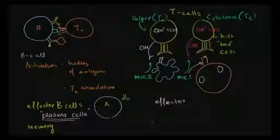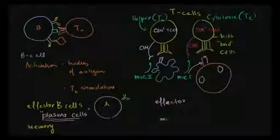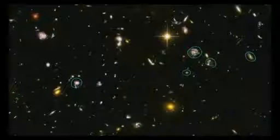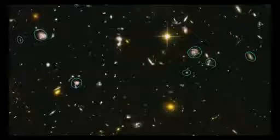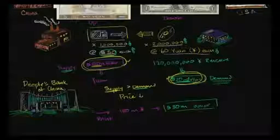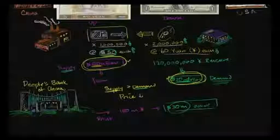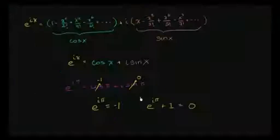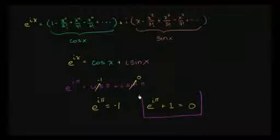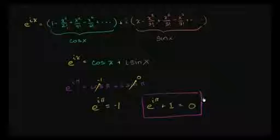Start differentiating into effector and memory cells. A galaxy. There's another galaxy. And for dollars, is there $30 million plus the $20 million from the American manufacturer? If this does not blow your mind, then you have no emotion.